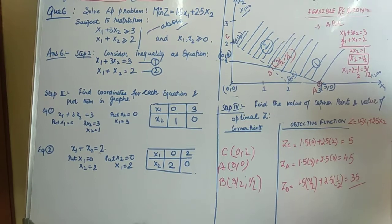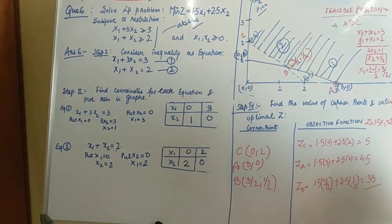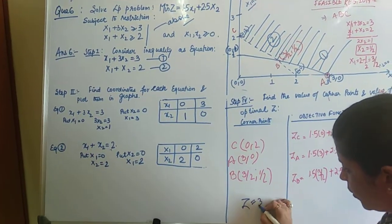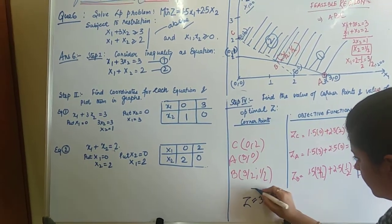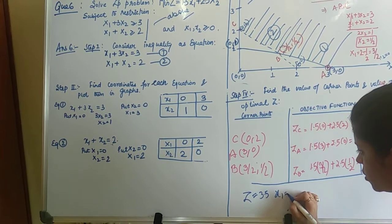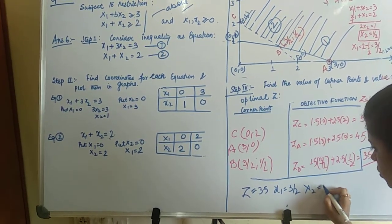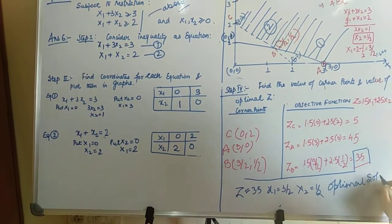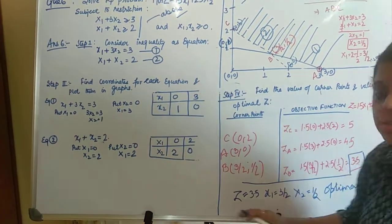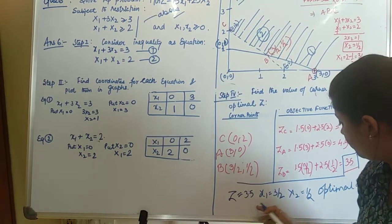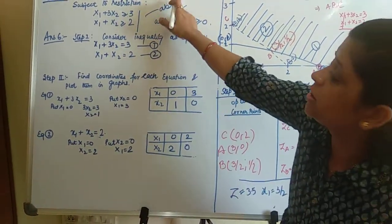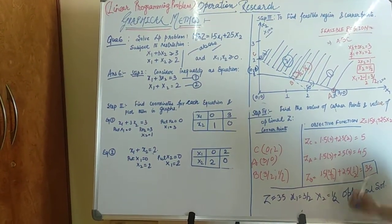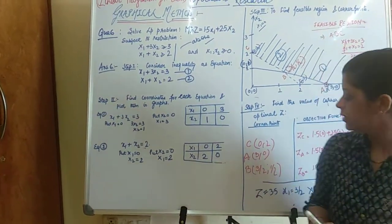We have to find the minimum value of z. The minimum is zB equals 3.5. So the optimal solution is z equals 3.5, where x1 equals 3/2 and x2 equals 1/2. This is the optimal solution because this is the minimum value, as the question asks for the minimum value of z. The question is completed.